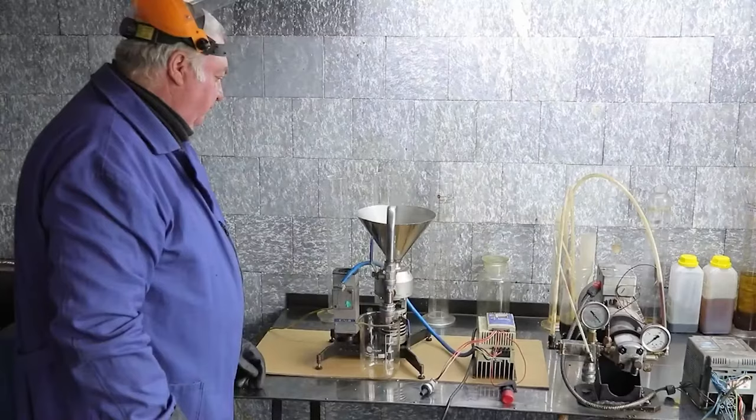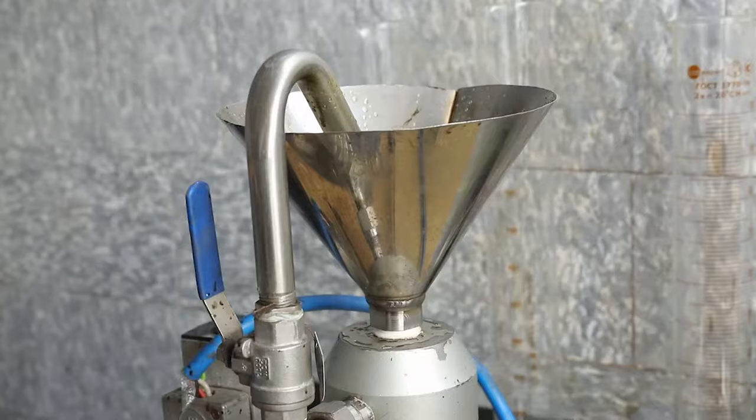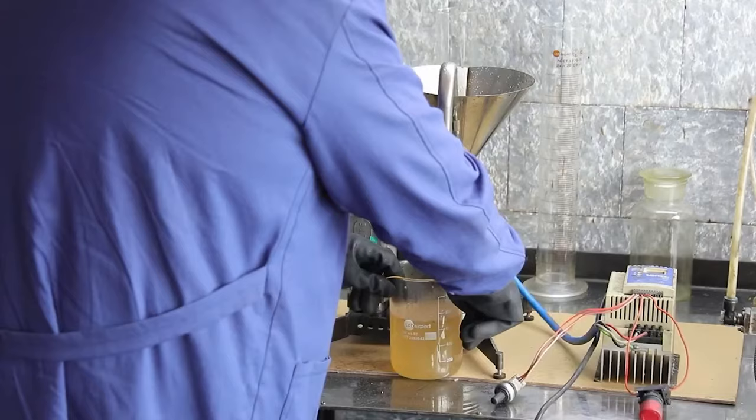Having warmed up the colloid mill, we turn it off and drain the water. Now, we've got everything ready for obtaining a bitumen emulsion. We turn on the colloid mill again.